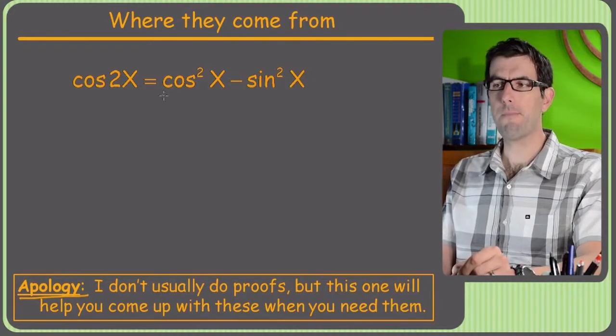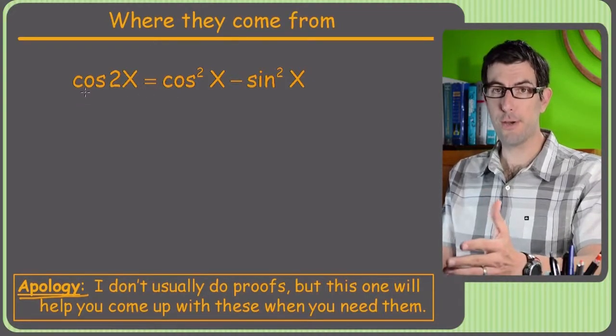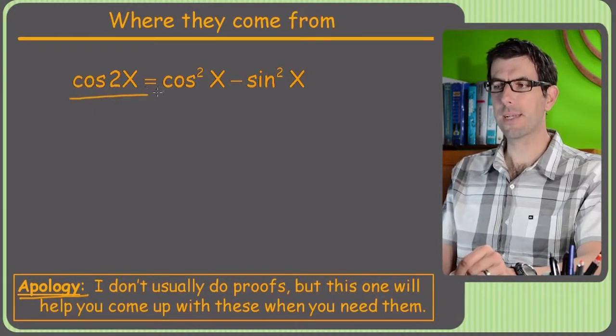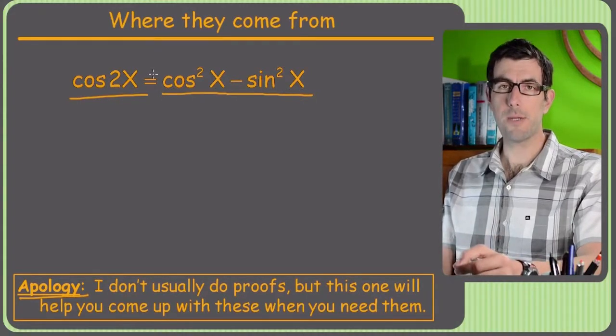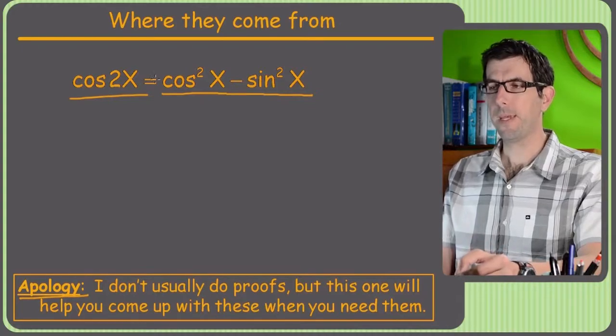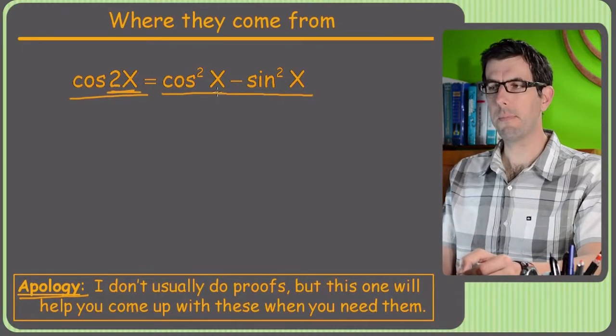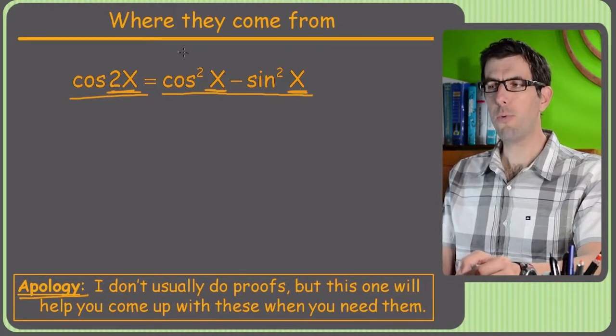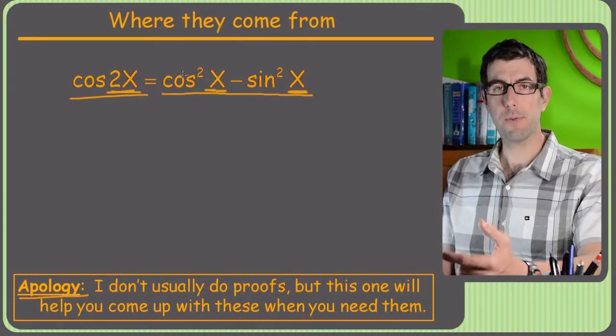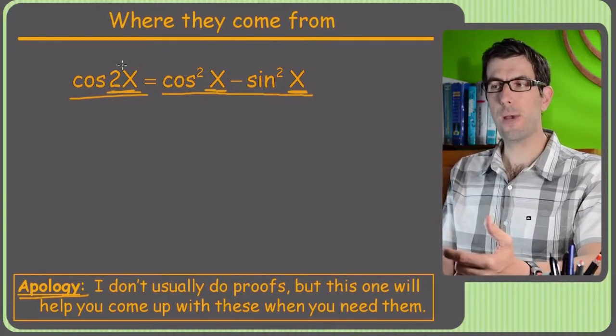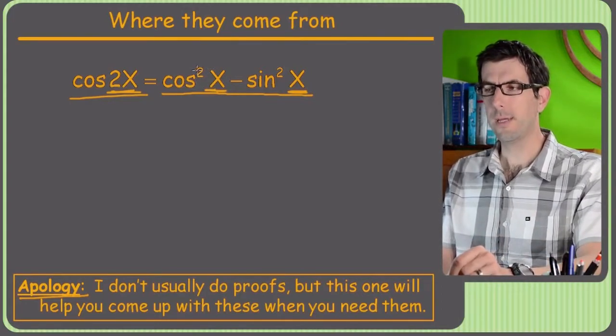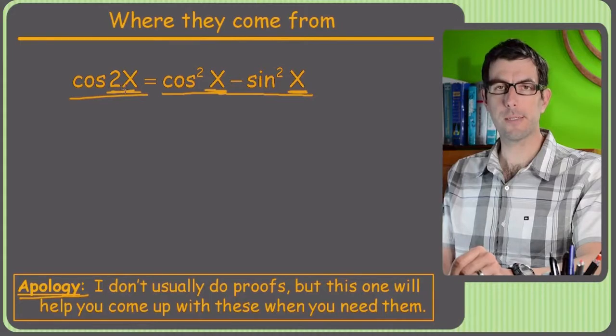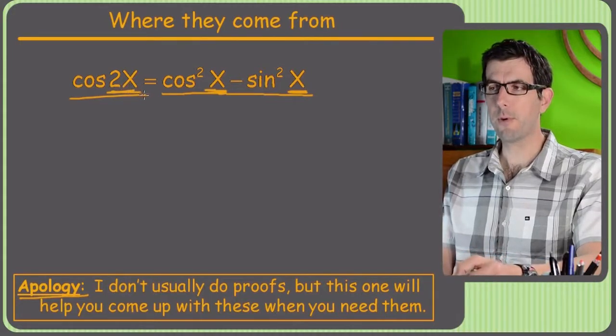So where these come from is this identity, which you should know, which is cosine 2x equals cosine squared x minus sine squared x. And just to remind you, this is the double angle formula, and that's why we have 2x here, but then x and x. So the whole point of this formula was to be able to reduce things that had 2x and make them just be about x, for whatever reason you want in trig, get down to x's instead of 2x's.